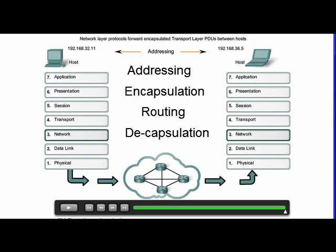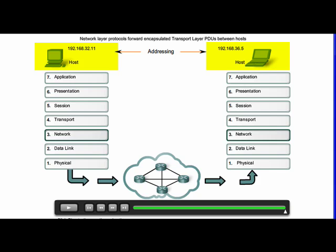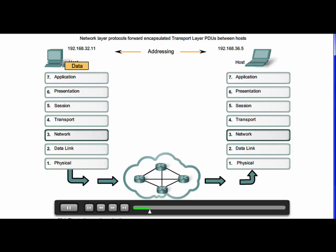First, the network layer must provide a mechanism for addressing end devices. If data are to be directed to an end device, that device must have a unique address. Second, the network layer must provide encapsulation. During the encapsulation process, Layer 3 receives the data from the transport layer in a Layer 4 PDU and adds a Layer 3 header, or label, to create the Layer 3 PDU, which is called a packet.